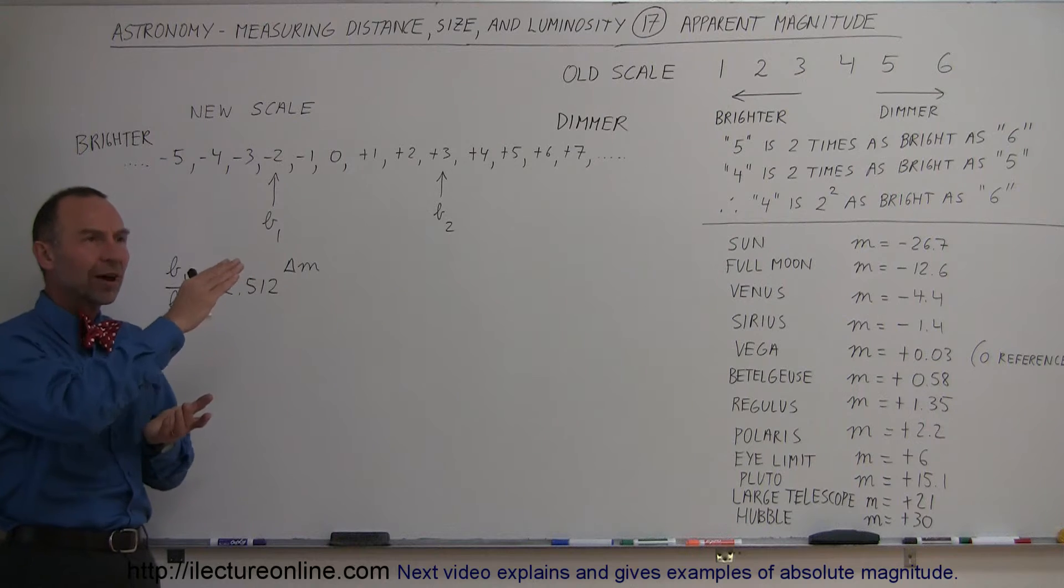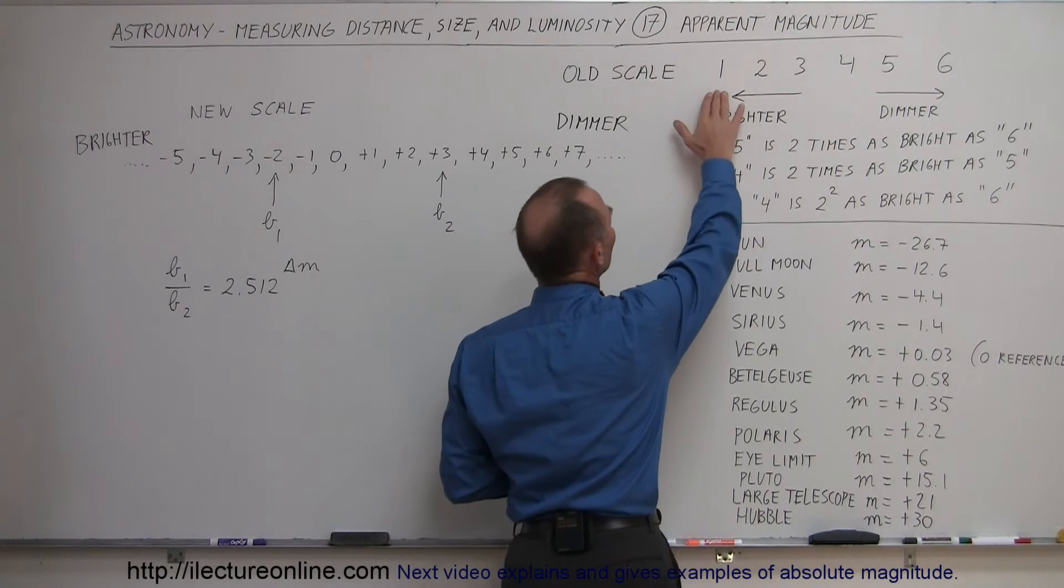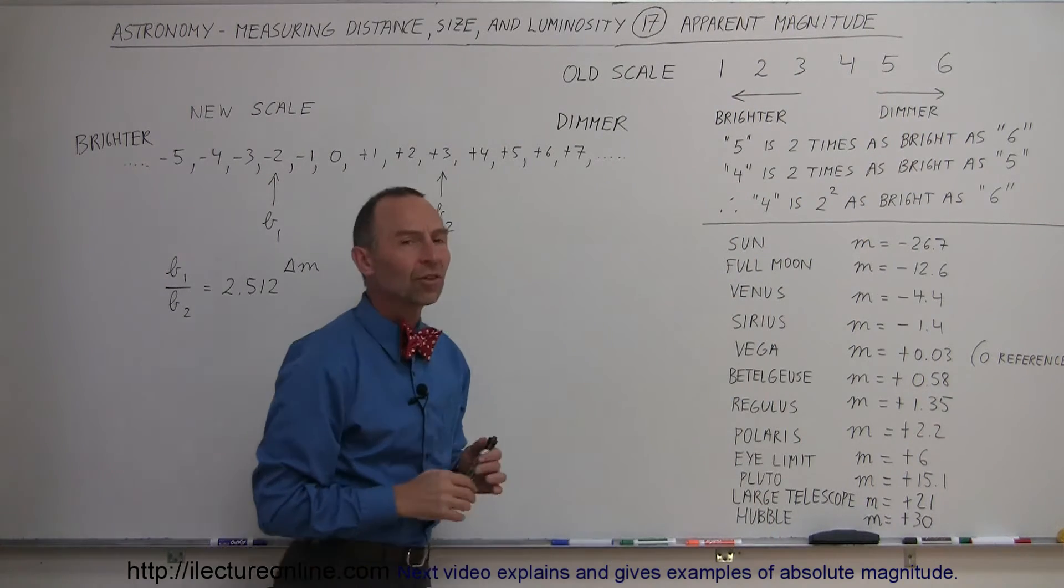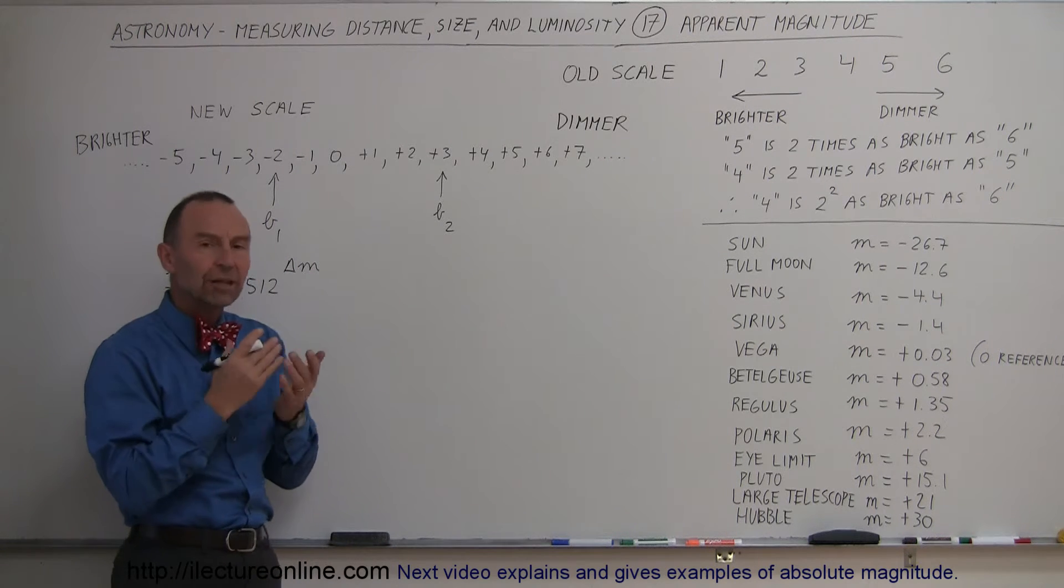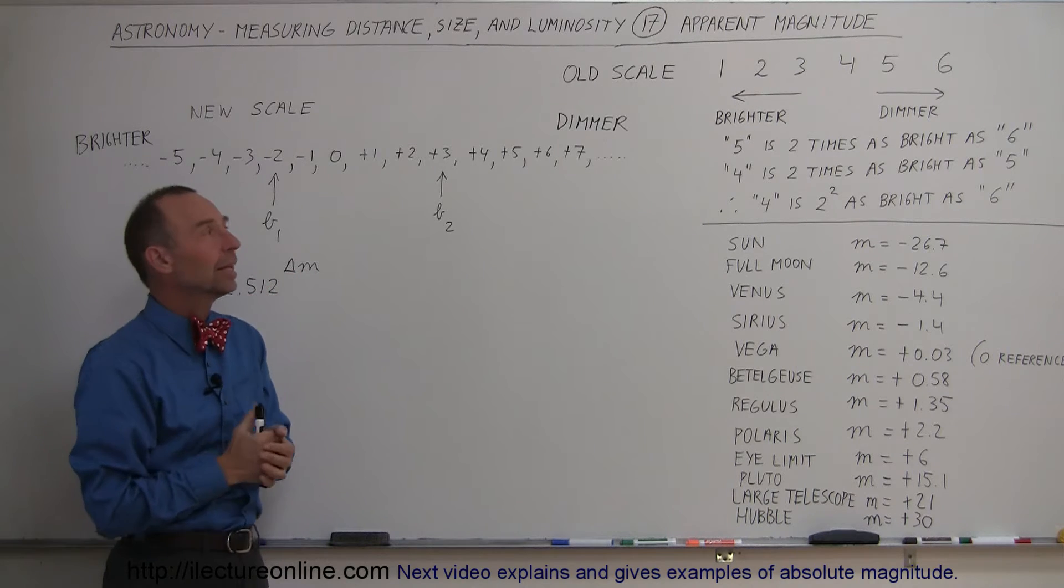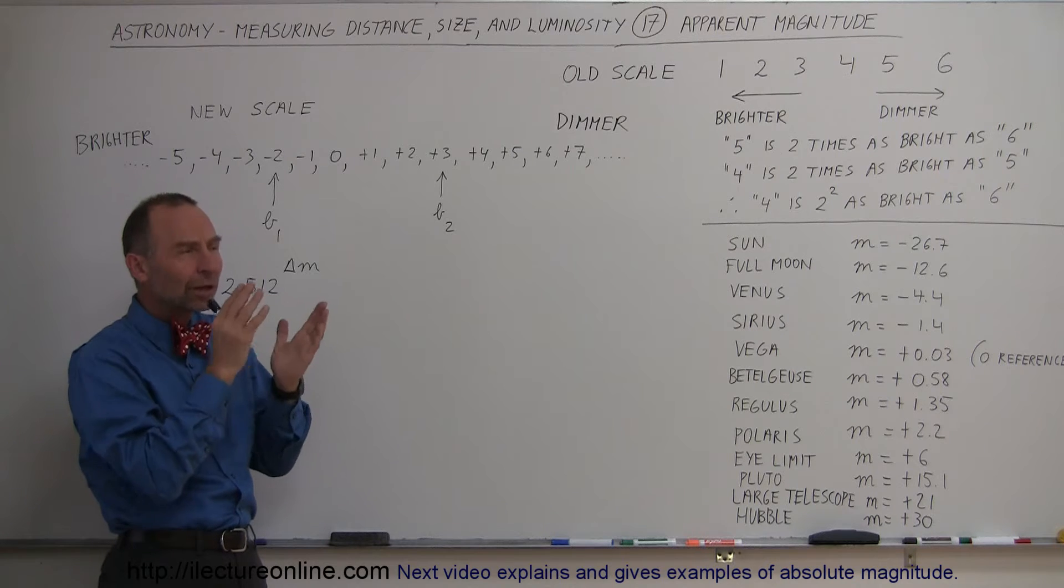They began to classify stars by their brightness, and they came up with this brightness scale, where one meant the brightest stars in the sky, and six meant the dimmest stars in the sky. They didn't have any fancy telescopes or good instruments to really measure the brightness. They just went by what they could see with the naked eye, and estimated based upon what it looked like.